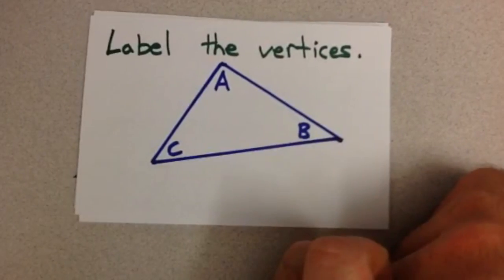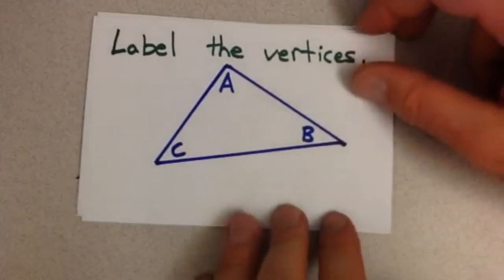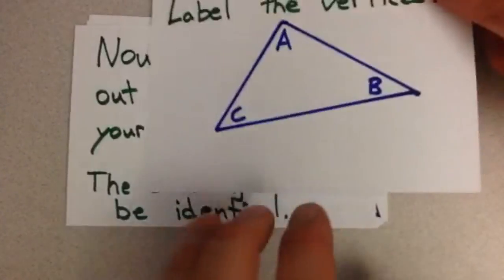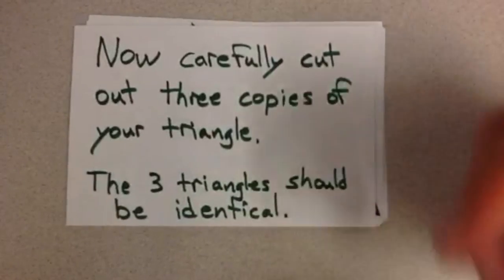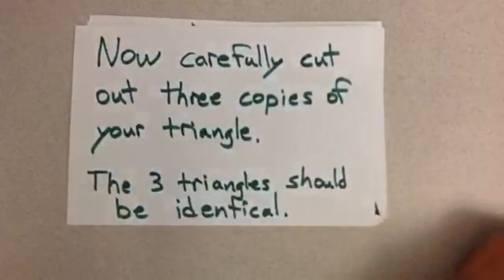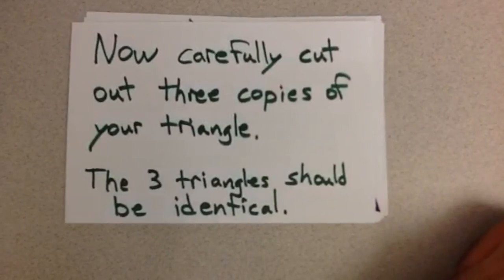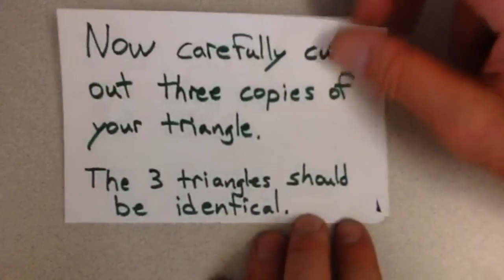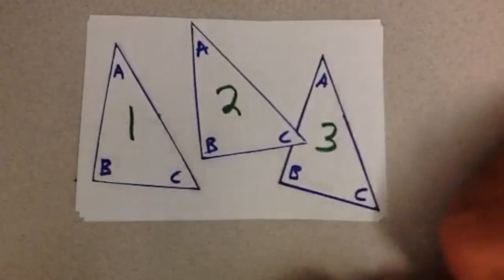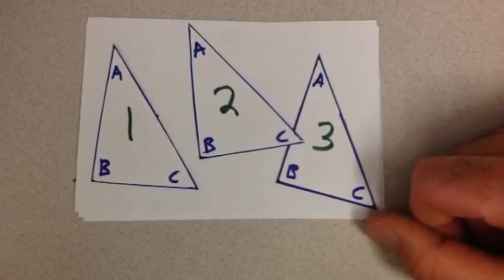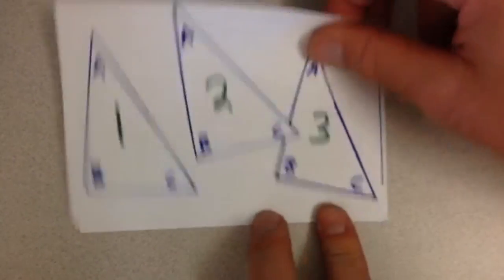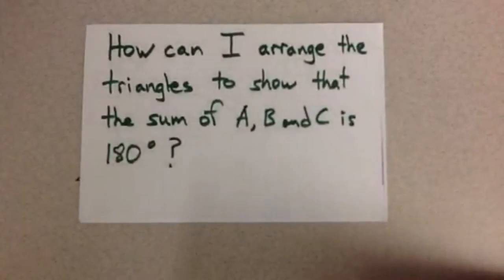Next, label the vertices A, B, C because we are very creative. Now carefully cut out three copies of your triangle. The three triangles should be identical, like these three triangles that I cut out.